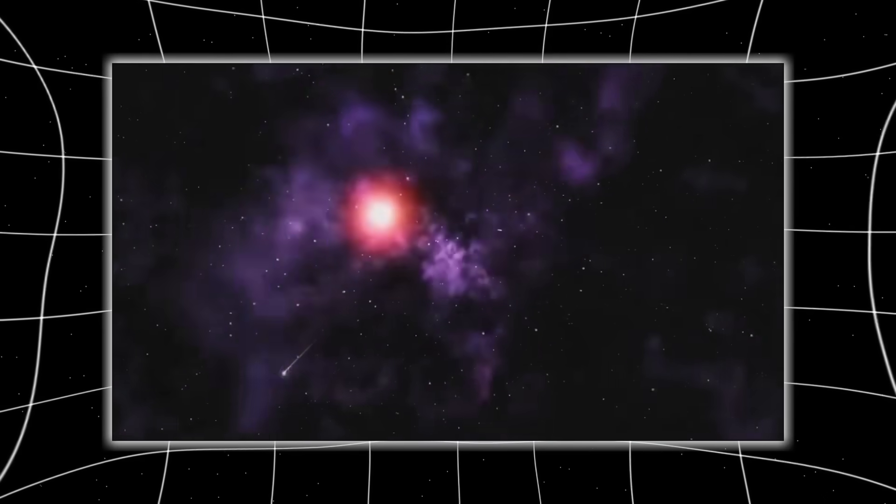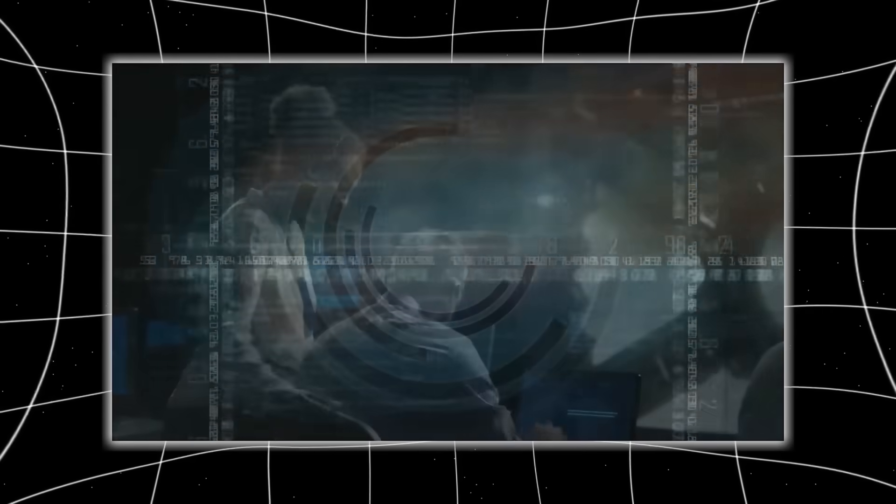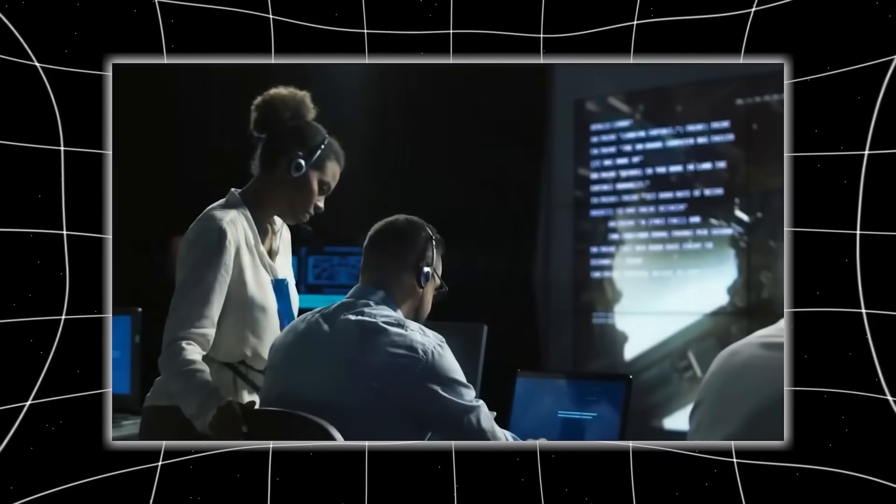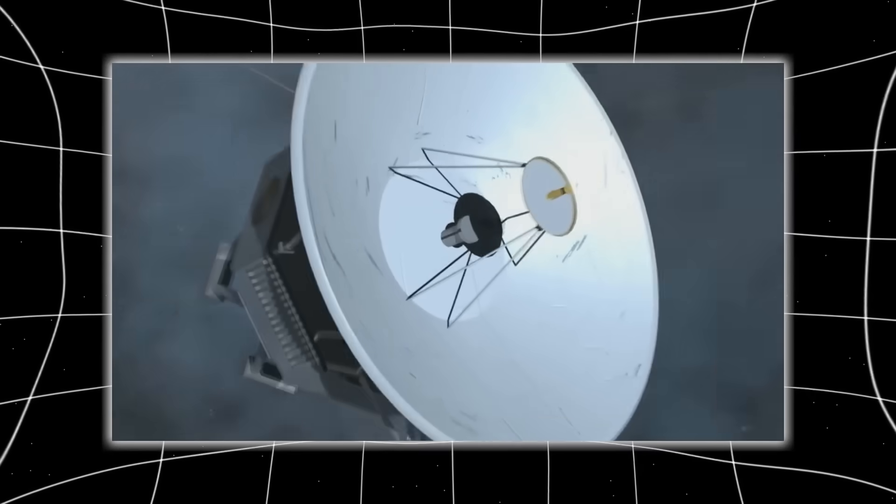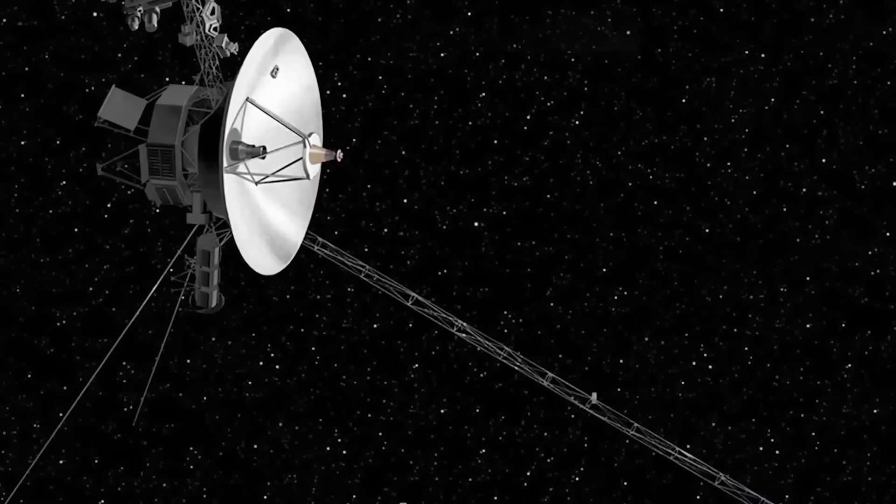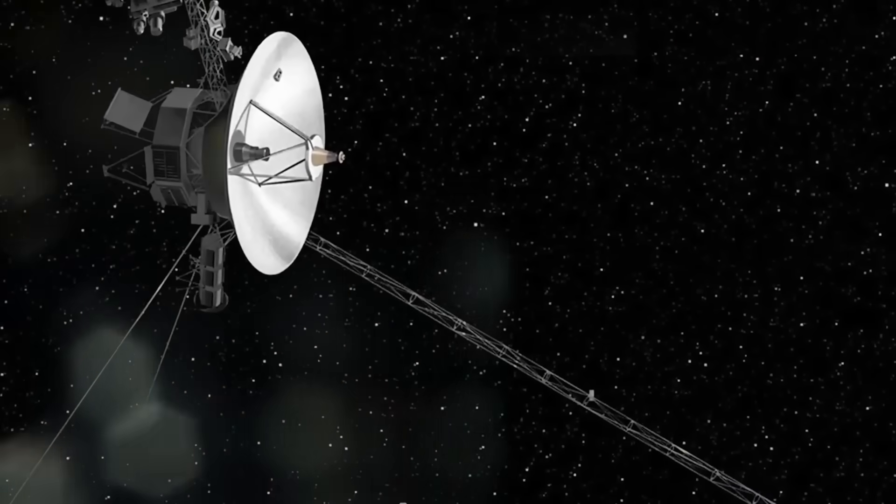From that moment on, it drifted through the deep void with one job, transmit data. Its antenna was locked on Earth, its thrusters long silent, and its mission extended by the sheer resilience of 1970s engineering.